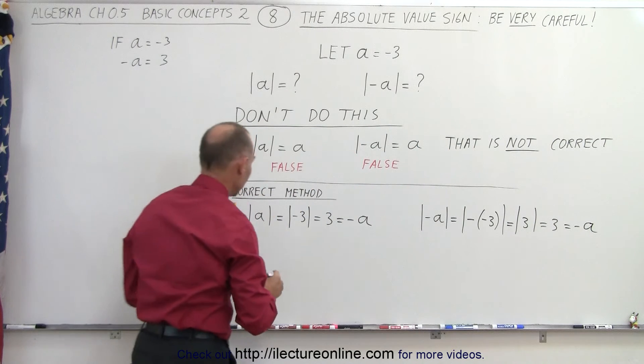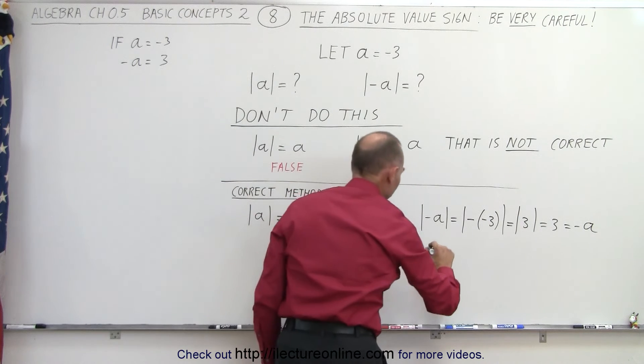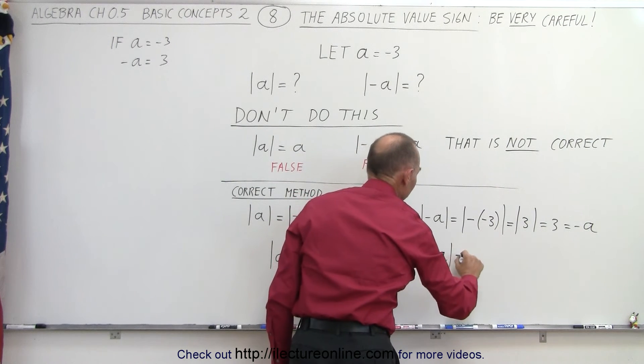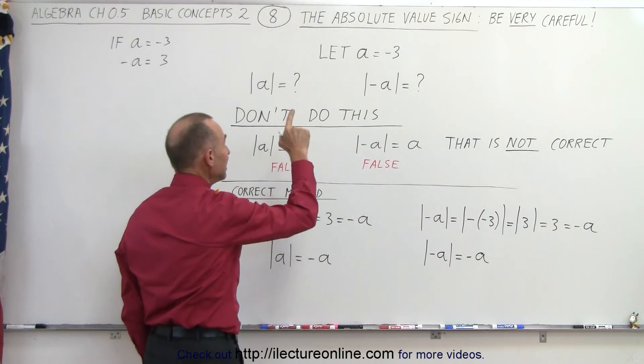So the result is that the absolute value of a is equal to negative a, and the absolute value of negative a is equal to negative a, if a is a negative number.